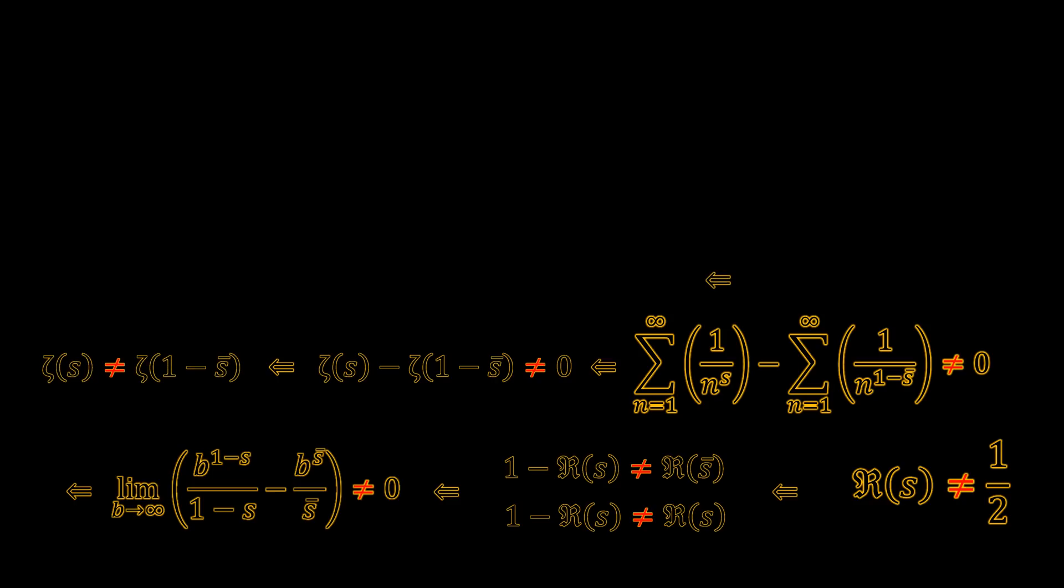Therefore, zeta of s and zeta of one minus s conjugate cannot be equal to zero. In other words,